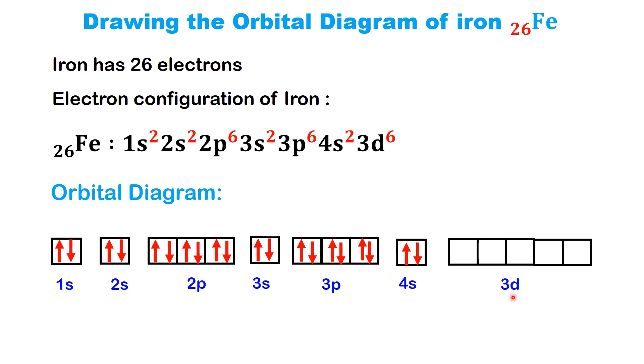Now, we move to the 3d6 orbital. According to Hund's rule, each of the five 3d orbitals will get one electron before any pairing occurs. So, place one up arrow in each of the five 3d boxes. After all five 3d orbitals have one electron each, we go back and pair up electrons to fill the orbitals. Since iron has six electrons in the 3d sublevel, we add one more down arrow to the first orbital.